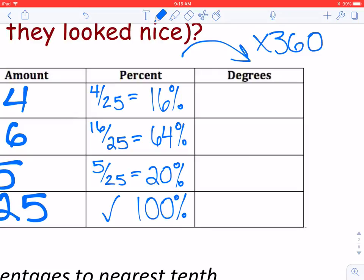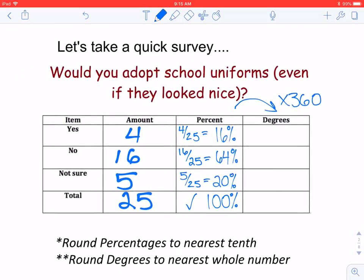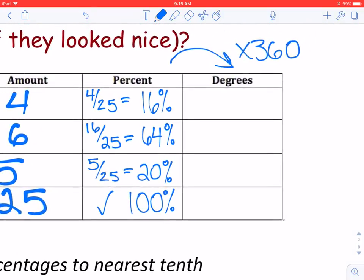If I take 16% or 4/25ths times 360, my first angle measure for the amount of yes votes is going to come out to 57.6 degrees, which I'm going to round to the nearest whole number. With the size of our protractors, it doesn't really benefit me to keep a decimal here, so I wouldn't be able to find it.